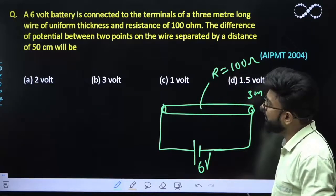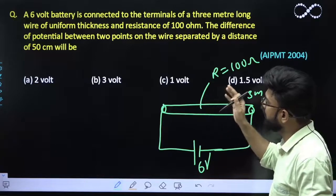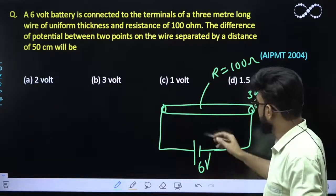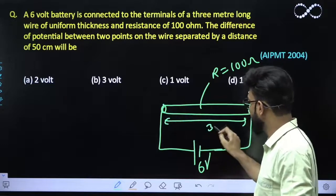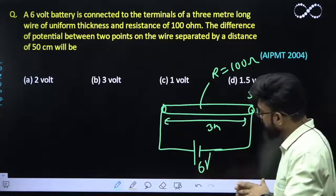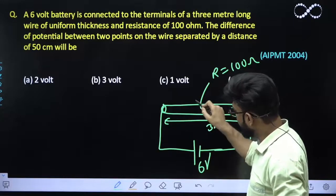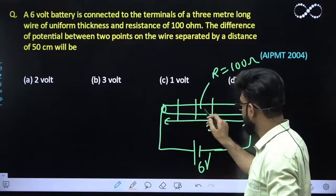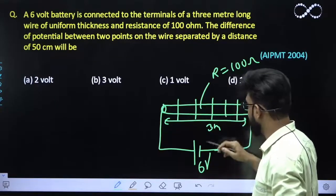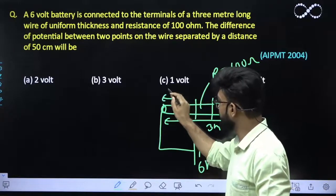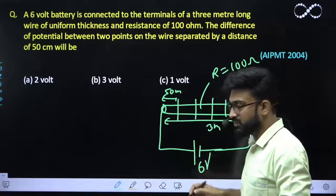The difference of potential between two points on the wire separated by a distance of 50 centimeter will be. So this is a 3 meter long wire, the potential difference across its terminal would be 6 volt. So if I divide it into 6 parts, each length would comprise of 50 centimeter.